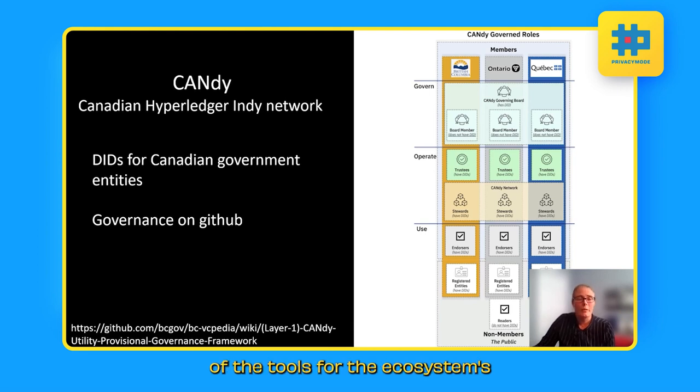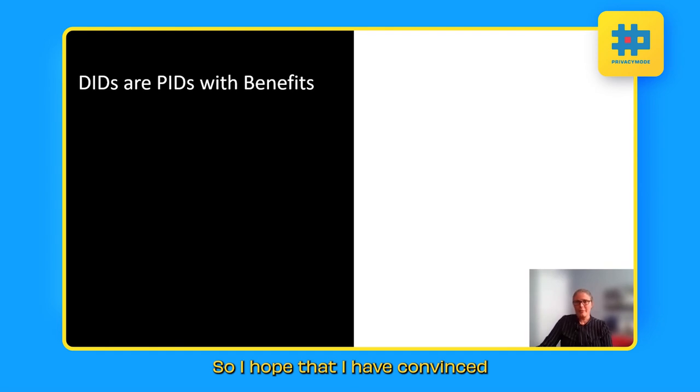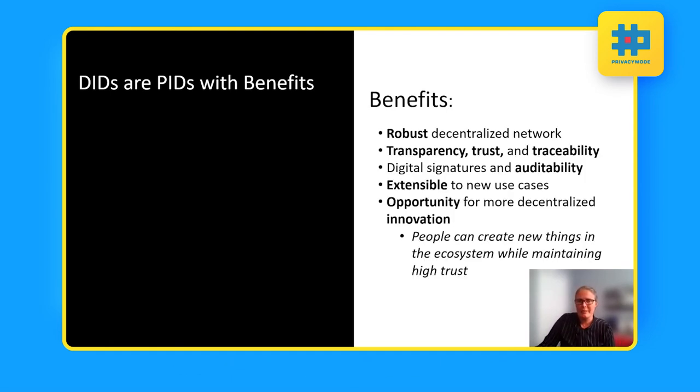So you can see some of the efforts that are currently being done with different parts of the tools for the ecosystem of persistent identifiers. And as I said before, the W3C, they have now recommended officially DIDs and VCs. Canada is also looking towards digital trust and identity and is certainly referencing these standards as well. So I hope that I have convinced everyone here that DIDs are indeed PIDs with benefits.